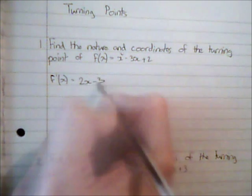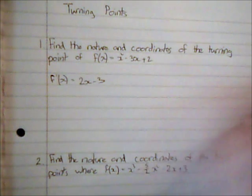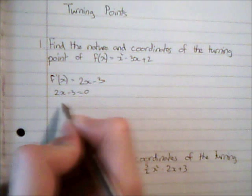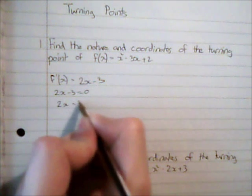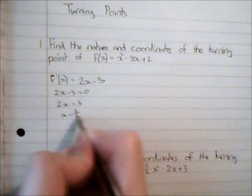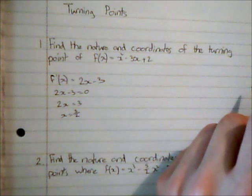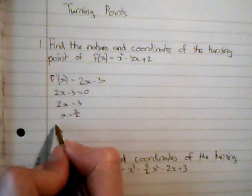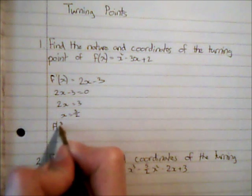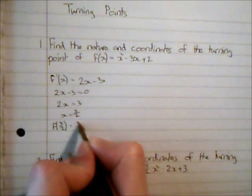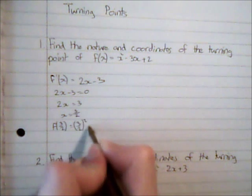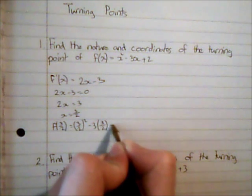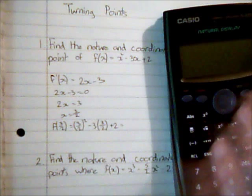Differentiating gives me 2x minus 3. So where 2x minus 3 equals zero, 2x equals 3, x equals 3 over 2. Now I'm going to substitute that into the original function. So f(3/2) equals (3/2) squared subtract 3 lots of (3/2) add 2.